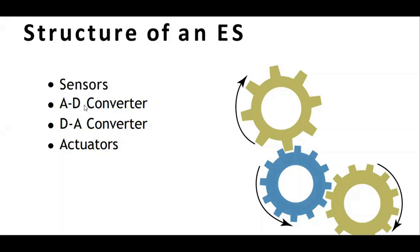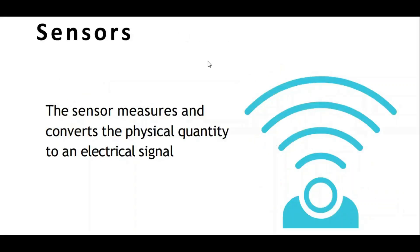Why do we need analog-to-digital converters? Some sensors produce analog values, but the system processes digital values — for example, a thermal sensor. Digital-to-analog converters are useful when actuators require analog signals from digital outputs. Sensors convert physical quantities into electrical signals.